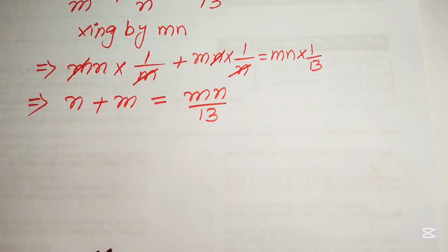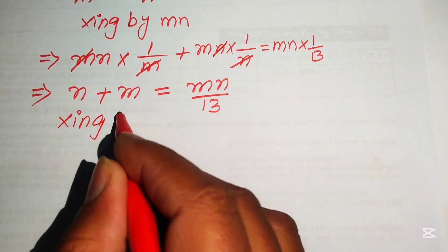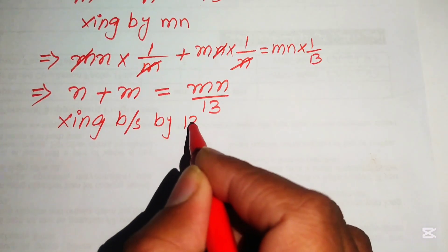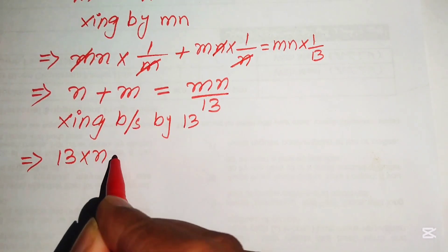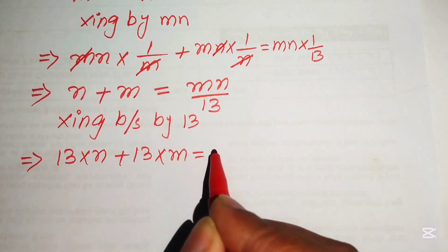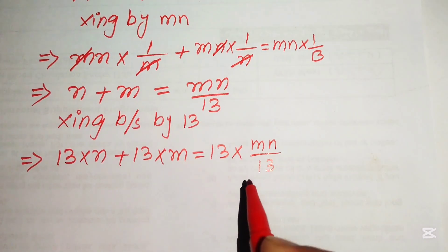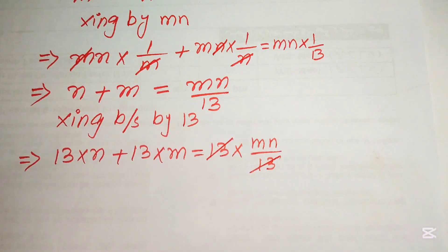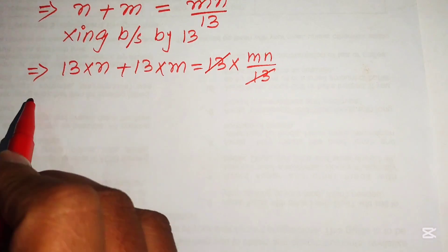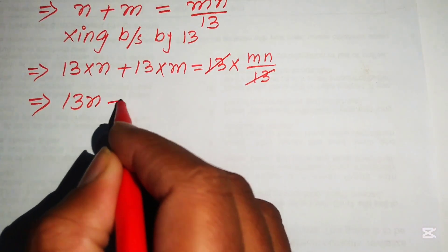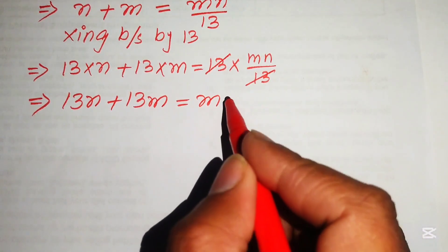Now we move the 13 to the left-hand side by multiplying both sides by 13. This gives us 13n plus 13m equals mn.